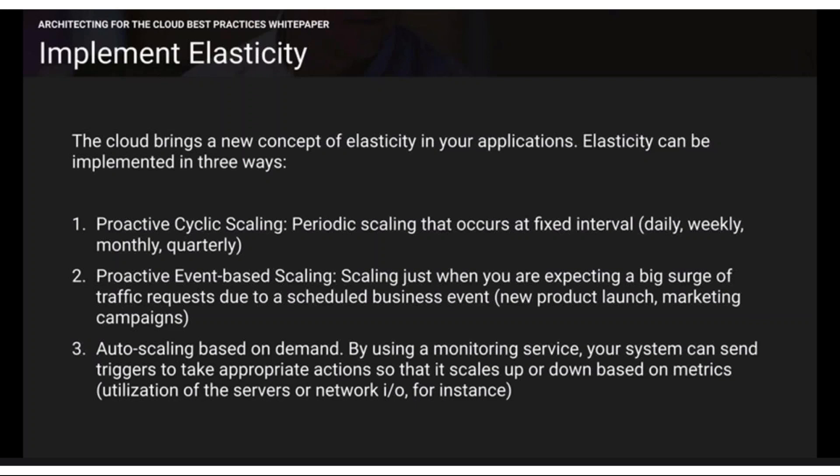For an event like a product launch that happens maybe once every three months, you use proactive event-based scaling — scaling when you're expecting a big surge of traffic due to a scheduled business event like launching a new product or marketing campaign. The third type, auto scaling based on demand, triggers when CPU utilization increases. Remember: proactive cyclic scaling, proactive event-based scaling, and auto scaling based on demand.